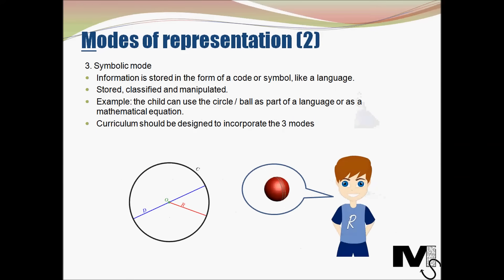The next mode is the symbolic mode. This mode is more flexible than the previous two and is the last to develop. In this mode, information is stored in the form of a code or symbol, like a language. Symbols and codes can be stored, classified and manipulated. Continuing with the same example, the child can use the image of the ball and use it as part of a language by calling the object 'a ball', or as part of a mathematical equation by calculating its diameter or radius. Storing information symbolically can imply storing objects in language form, mathematical equations, musical forms, or any other form.